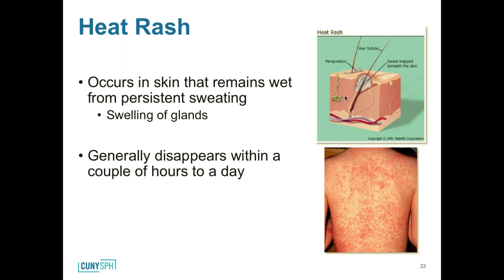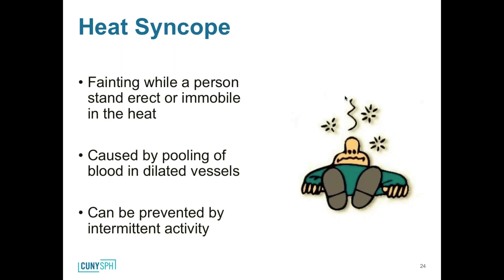Heat rash occurs when clothing gets wet and remains on the skin, causing obstruction and swelling of the sweat glands; it can get infected, so remove clothing immediately and rinse off. Heat syncope is essentially fainting, caused by pooling of blood in dilated vessels when immobile for too long — whether sitting or standing. It can be prevented by getting up and moving regularly to keep blood circulating through the rest of the body.